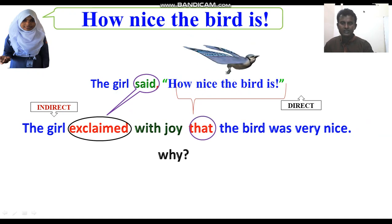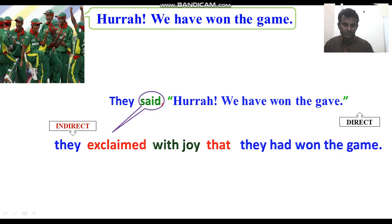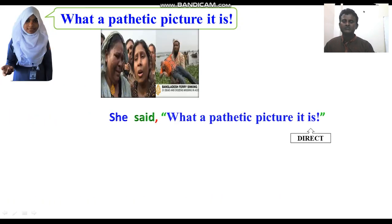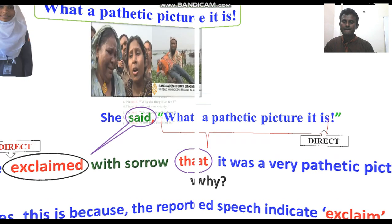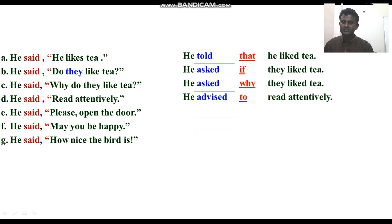When the reported speech is an exclamation of joy, 'said' becomes 'exclaimed with joy'. For example, 'Today we have won the game' — they exclaimed with joy. 'What a pathetic picture it is' — 'said' becomes 'exclaimed with sorrow'. For questions starting with a helping verb, we use 'if'. For WH-questions like 'why', we use 'why'. For requests, we use 'to'.